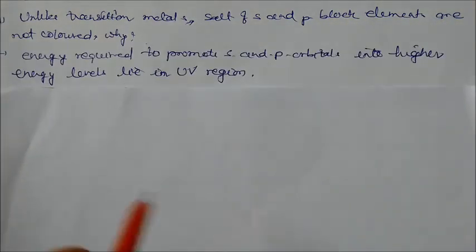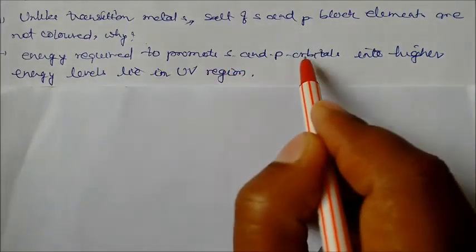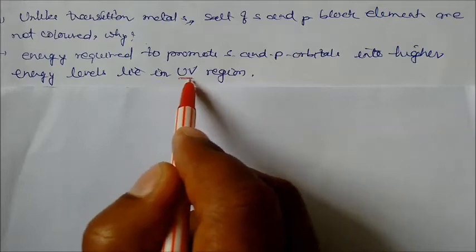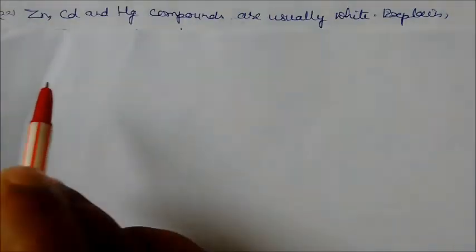Unlike transition metals, salts of s and p block elements are not colored. Energy required to promote electrons of s and p orbitals into the higher energy levels they lie in the ultraviolet region. That's why they are not showing colors.